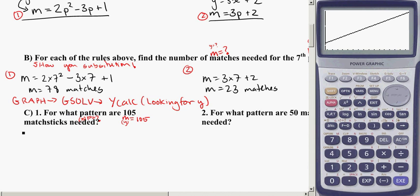So the first thing I'm going to do is write out my rule to show the substitution I would use. So I don't know p in this case, but I do know m. So instead of writing m, I'm going to write 105 is equal to 2p squared minus 3p plus 1, because I know what m is, but I don't know what p is. So that's my first step, showing the substitution.